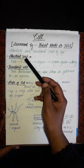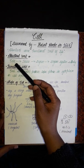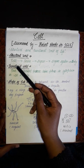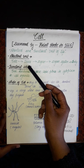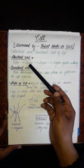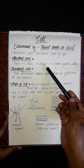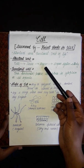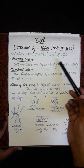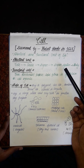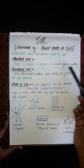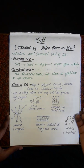The cell is the structural unit of life because when cells aggregate together they form tissues. When different types of tissues aggregate they form an organ. When different types of organs aggregate they form an organ system. When different organ systems work simultaneously they make a body. So we can say that the cell is the structural unit of life.